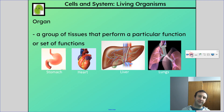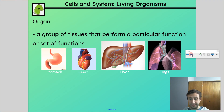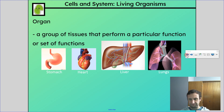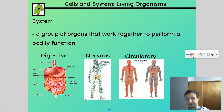When I put a bunch of different tissues together performing a simple function, I call that an organ — a stomach, heart, liver, or lung would be an organ. In plants, leaves are actually an organ too. When I have a bunch of organs and tissues working together to perform a bodily function, that's a system — examples include digestive, nervous, and circulatory systems.